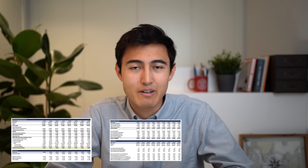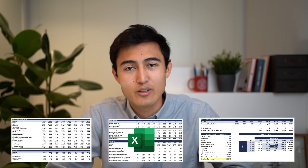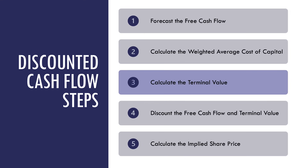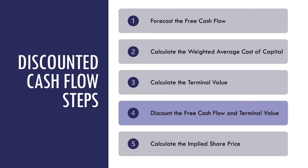In this video, we'll go over a full discounted cash flow model on Excel using five steps. First, we'll forecast the company's future cash flows. Second, we'll calculate the WACC, which is the discount rate we'll use to bring back the future cash flows to the present. Third, we'll calculate the terminal value, which is the value of the company after the forecasted period. Fourth, we'll discount both the cash flows and the terminal value back to the present value. And lastly, we'll calculate a valuation, an implied share price, and a sensitivity table. Don't worry if you didn't understand some of these steps — we'll go over them in detail in the video.